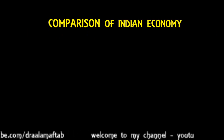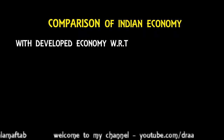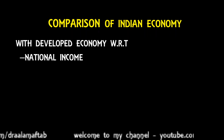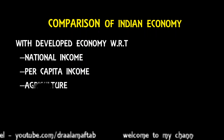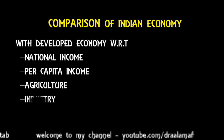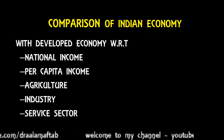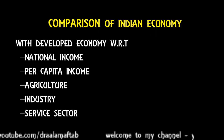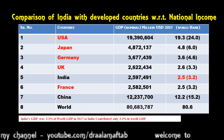The topic is comparison of Indian economy, and we are doing comparison with developed economy with respect to national income. This is the first parameter. The second parameter is per capita income, third is agriculture output, fourth industrial output, and fifth is service sector output. So now let us compare Indian economy with developed economy on each parameter.